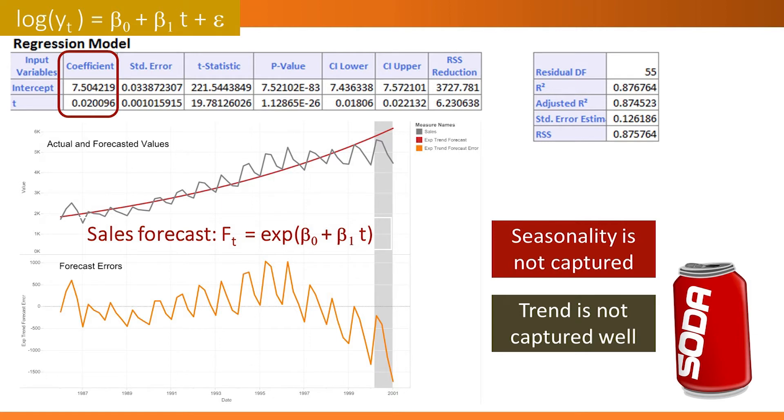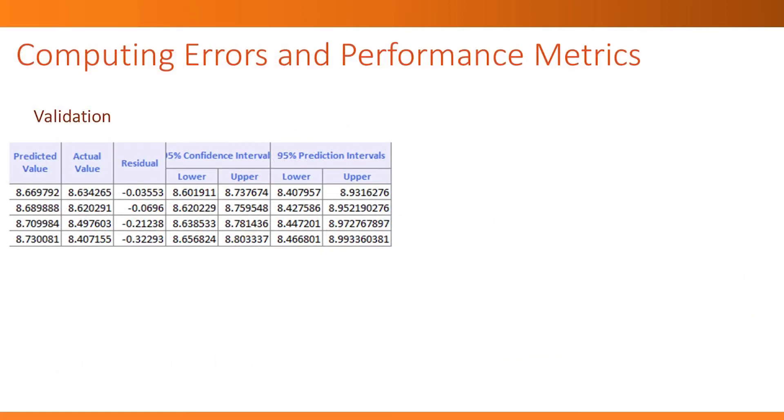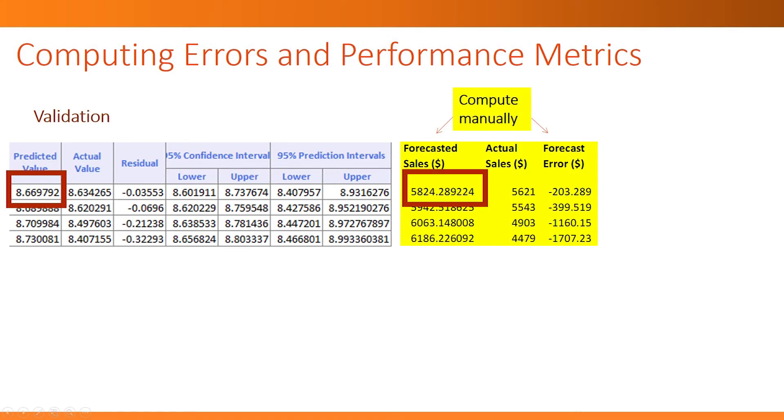Let's look at the performance metrics. Because we used log of sales as the outcome variable, then the software, here XLMiner, computed all the performance metrics based on the log scale forecasts. This is not helpful if we want to compare to models that use the original dollar scale, like the linear trend model. We therefore need to compute the performance metrics manually by first transforming forecast errors back into dollar amounts, and then recomputing forecast errors. For example, for the first record in the validation period, the model's forecast is 8.67. This is in log of dollars. We therefore transform it into dollars by taking an exponent, and we get 5,824.29. We need to subtract the actual sales in that quarter to get the dollar amount forecast error.